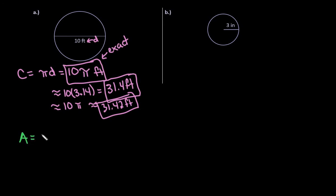All right, for the area, remember that area is pi r squared. So we do have to use the radius. So the radius is going to be half of 10, which is 5. So we would plug that in, and we would have pi times 5 squared. So my exact answer would be 25 pi feet squared.